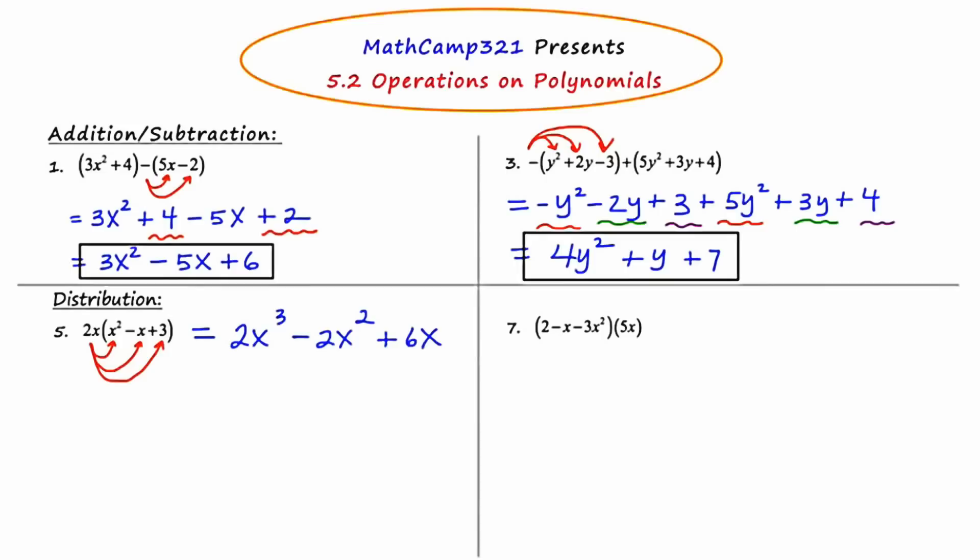When we do this multiplication, we end up getting 2x cubed minus 2x squared plus 6x. Scanning through this polynomial, there are no like terms — each one is one of a kind — and it's already in descending exponential order, which means this problem is done. I've successfully distributed.